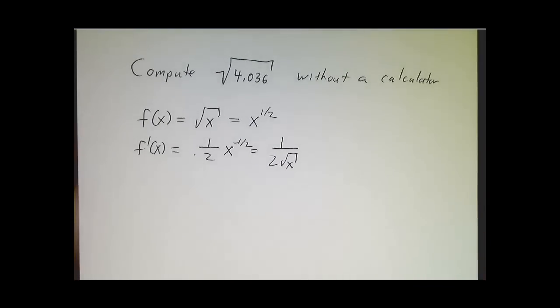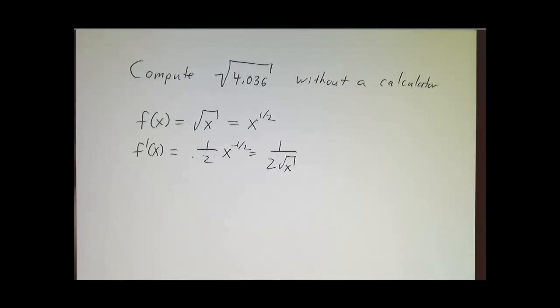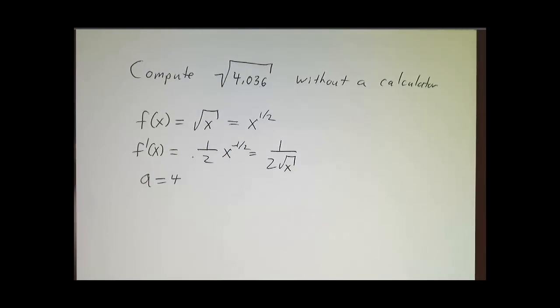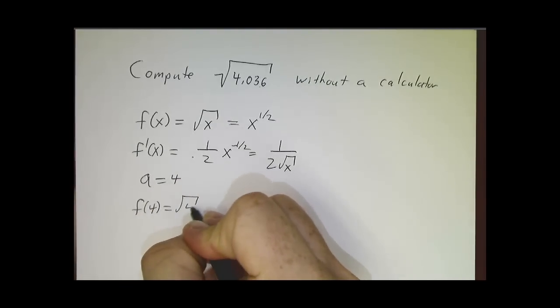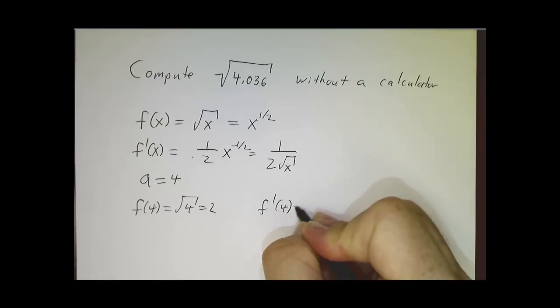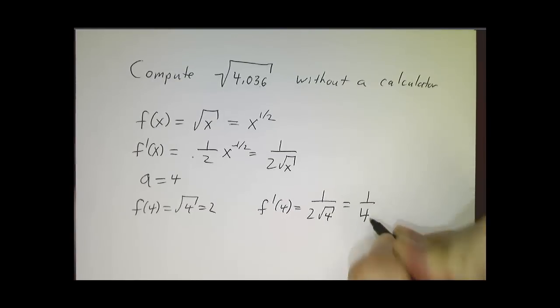The next thing is we want to understand where are we doing things. 4.036 is kind of a funny number, but there's a really nice number that's nearby, which is four. So we know that f is the square root of four, and that's two. And f prime is one over twice the square root of four, so that's one over four.